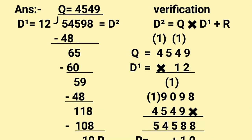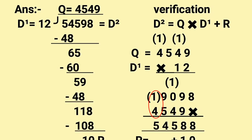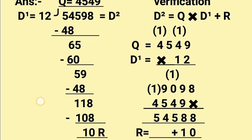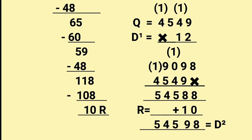Now for verification, let's multiply. 2 nines are 18, 1 carry; 2 fours are 8 plus 1 is 9; 2 fives are 10, 1 carry; 2 fours are 8 plus 1 is 9. Now 1 nine is 9, 1 four is 4, 1 five is 5, 1 four is 4. Let's add: 8 plus 9 is 18, 1 carry; 4 plus 1 is 5; 9 plus 5 is 14, 1 carry; 4 plus 1 is 5. After multiplication we add the remainder, r equals 10. So 8 plus 0 is 8, 8 plus 1 is 9, giving 5 4 5 — this equals dividend, so it is verified.